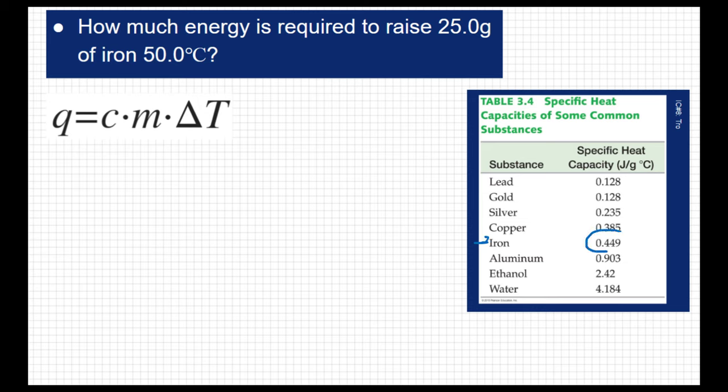So we're going to use this value of 0.449 joules per gram degree Celsius. Remember, these are our units for specific heat, joules per gram degree Celsius. So when we're looking at this equation, Q equals C M delta T, remember...